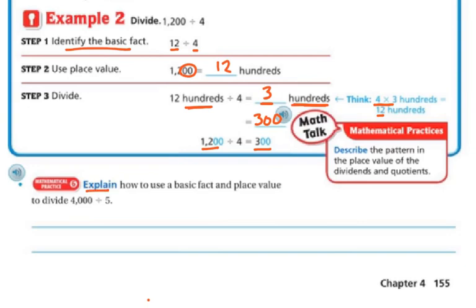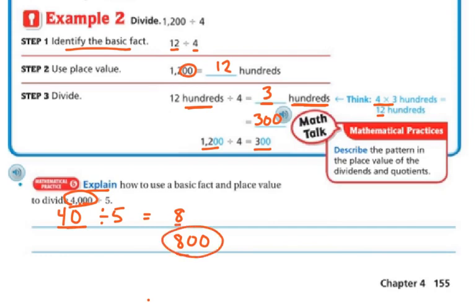How do you use basic facts and place value to divide 4,000 by 5? I know that 40 divided by 5 is my basic fact, and 40 divided by 5 is 8. But this is really 40 hundreds, so I need two zeros — my answer is 800. It's a little confusing because my basic fact already has one of the three zeros in it. So from 4,000, my basic fact uses one zero, leaving two zeros, so my answer is 800.